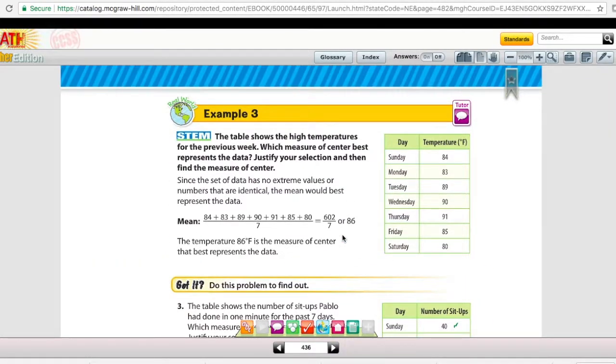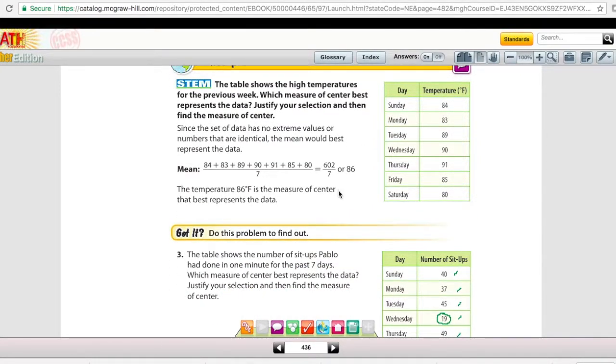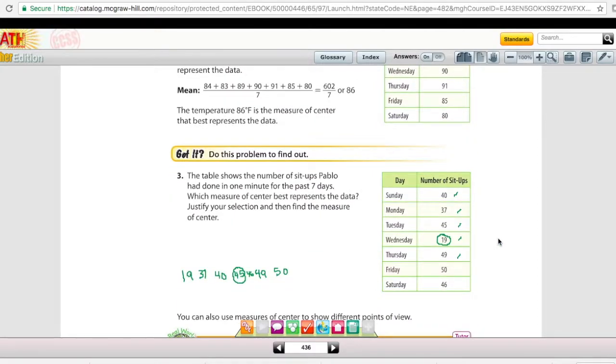On page 436, we have example 3 and it's asking us to take a look at the data of the number of sit-ups and then choose the best measure of center. If you're looking at example 3, there is this value, 19, that kind of doesn't match the rest of them. So there's an extreme value that we kind of don't want to pay attention to that might throw off the mean. So in this case, I think the median is the best case because there is that extreme value in there. So 45 would be the answer and so would the word median.